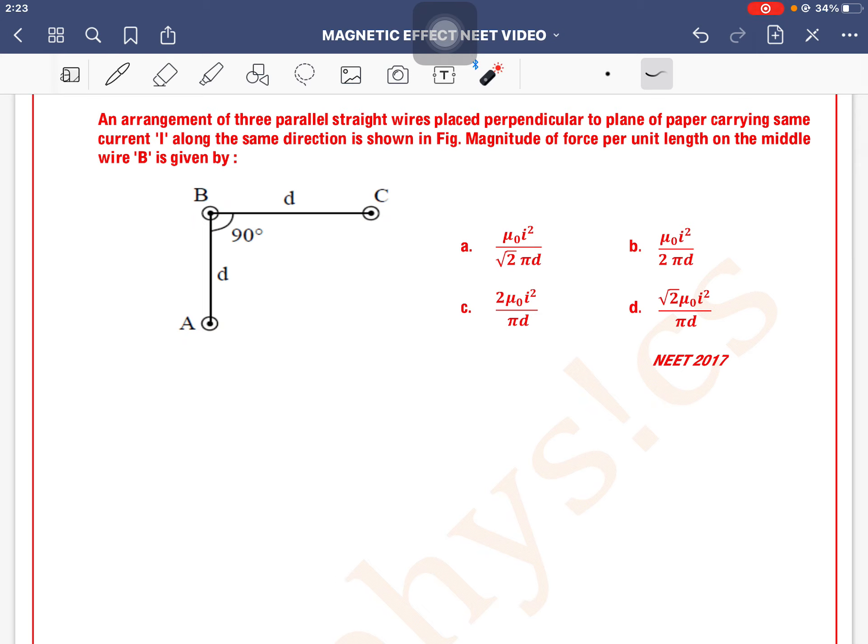Now we know that if current is traveling in same direction then there is a force of attraction between two wires. So when wire A and B are there, what happens between two? Attraction, right? And this is the force F1. As well as wire B and C, what happens between two? Attraction.